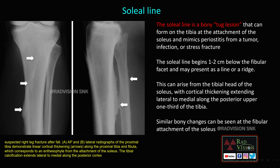Here you can see the soleal line — a linear cortical thickening seen in the proximal tibia and proximal fibula. This is the attachment of the soleus muscle and can mimic periostitis from tumor, infection, or stress fracture. This should not be confused with pathology — it is nothing but the soleal line or a bone tag lesion at the tibial and fibular attachment of the soleus muscle.